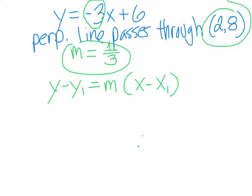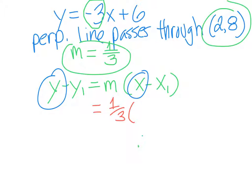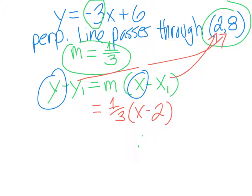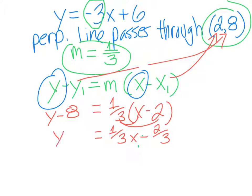Now I start plugging in my numbers. The y and the x I'm going to keep — they're not going anywhere. My slope for this new equation is positive one-third. Over here I keep the x but plug in the x value from my point, which is 2. For my y value I plug in 8, giving me y minus 8 on the left side.